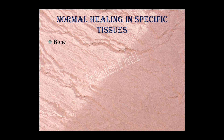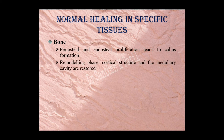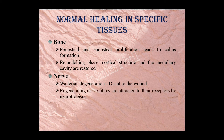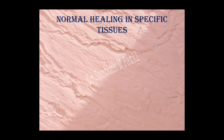Different processes of wound healing occur in different tissues. In bone, all phases are the same except in the proliferation phase — periosteal and endosteal proliferation leads to callus formation instead of granulation tissue. In remodeling, cortical structure and medullary cavities are restored. In nerve, Wallerian degeneration distal to the wound initiates healing, and regenerating nerve fibers are attracted to receptors by neurotropism. Profuse growth starts at the proximal end, and if uncontrolled, neuroma formation may occur.